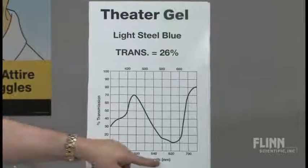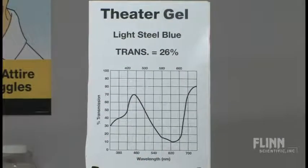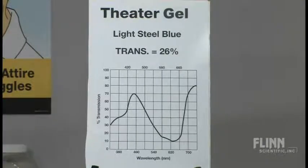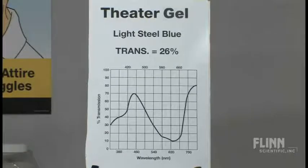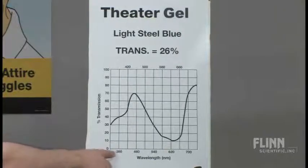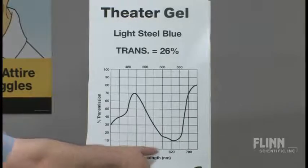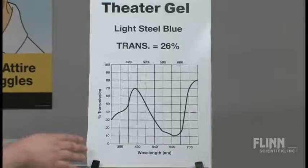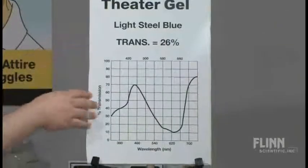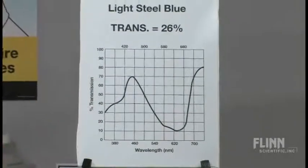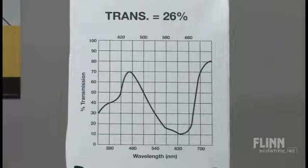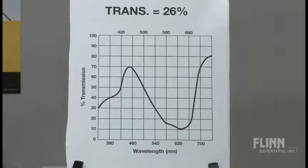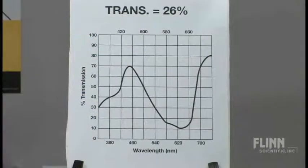But what we have down here is the wavelength in nanometers. What the students are seeing is that even theater majors need to have some understanding of particular wavelengths. We have 380 here and the wavelength goes all the way to 700, essentially the visible spectrum of light. But then on the vertical axis, we have percent transmission or percent transmittance. And this goes from 0 to 100 percent transmission.